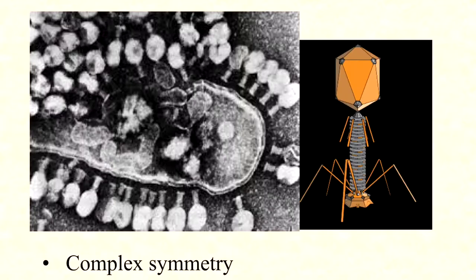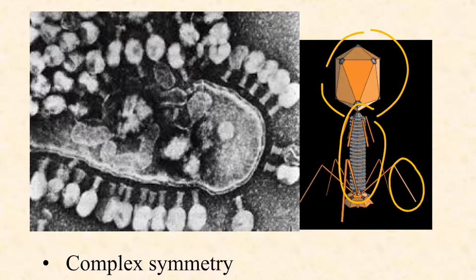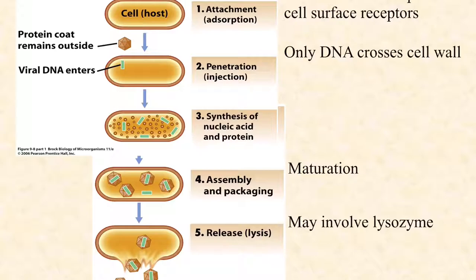So what exactly is a phage? It's a virus that infects bacteria. They have a complex symmetry, meaning they have an icosahedral or other polyhedral head, a helical tail, and a set of tail fibers involved in specific attachment. In this picture on the left, you see a bacterium bursting as phage particles attached to the outside have injected their DNA, taken over, replicated, and now hundreds of phage particles are being released. Almost always complex symmetry, almost always a double-stranded DNA genome.